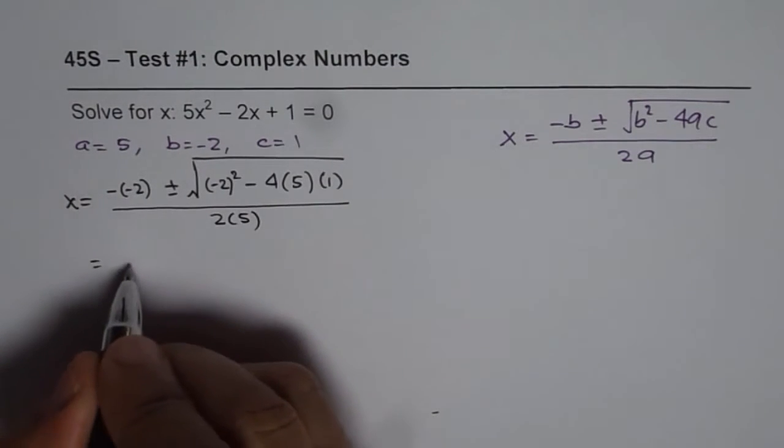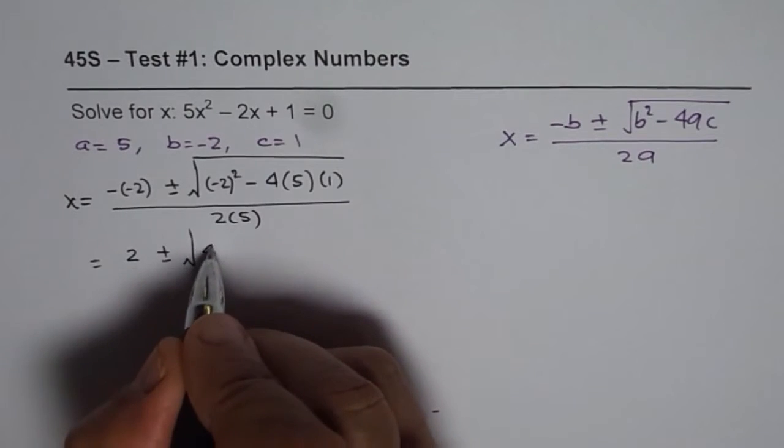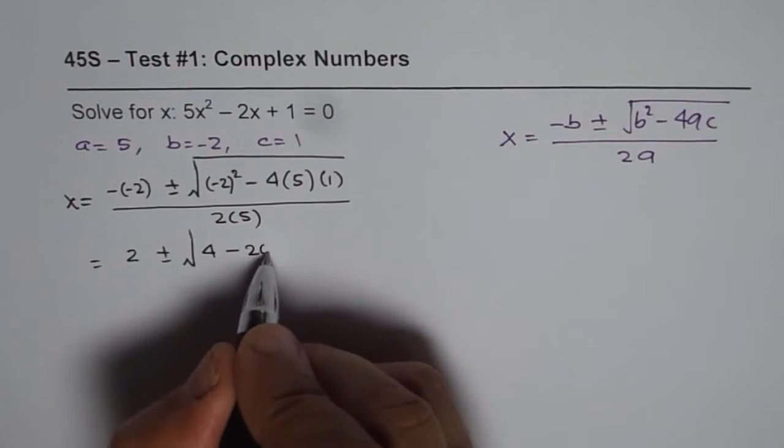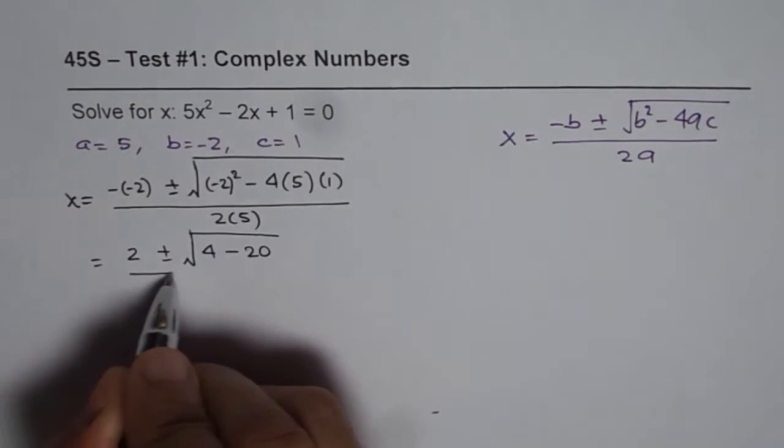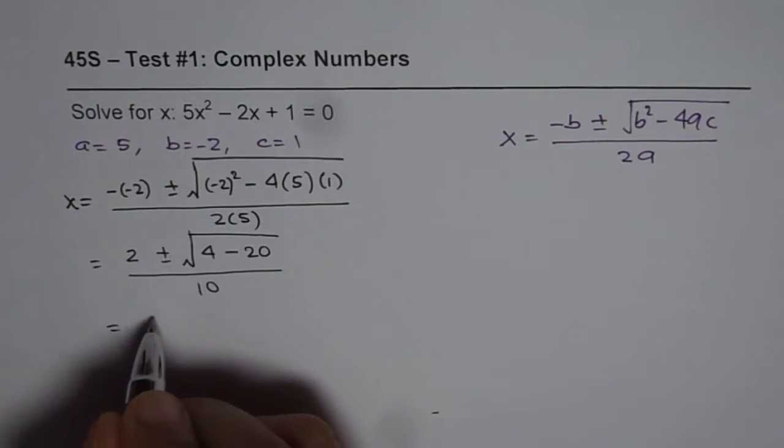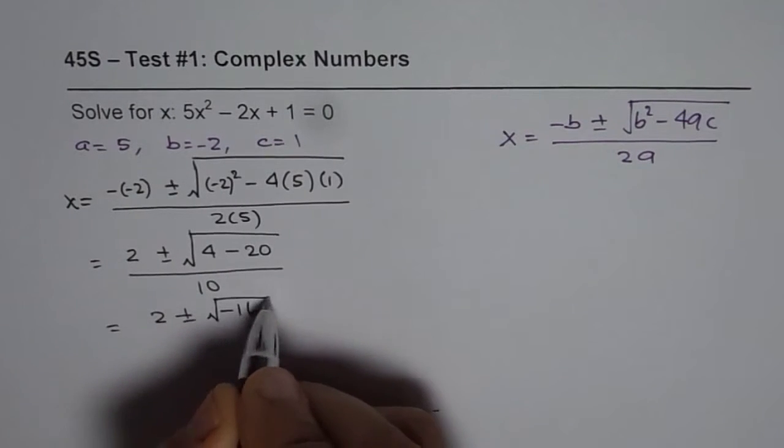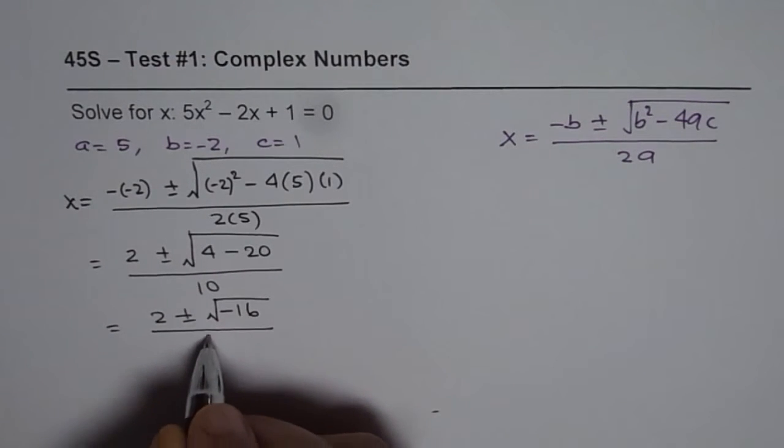So that gives us -(-2) is +2, plus minus square root of 4 - 20, divided by 10. So that is 2 plus minus square root of -16, divided by 10.